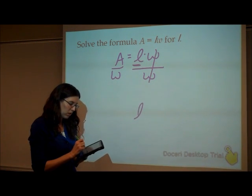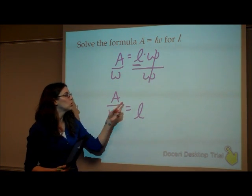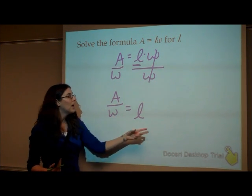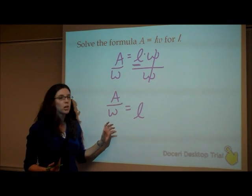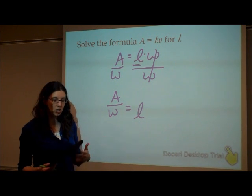Since I do that to the right side, I have to do the same thing over here. So on my right side, I'll be left with length. So the length is equal to the area divided by the width. That's what your formulas are going to look like. You're still going to have all of those letters in there, and we're not going to have any numbers. But whatever you're solving for is on its own.